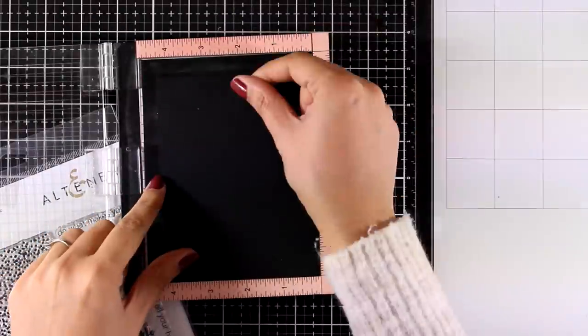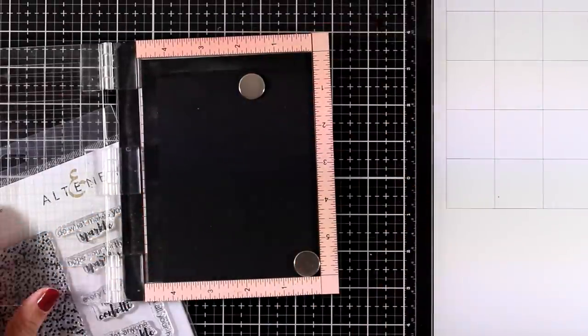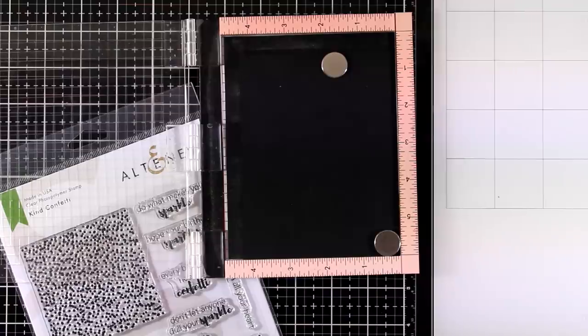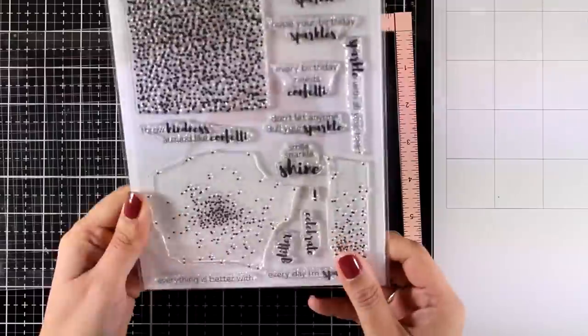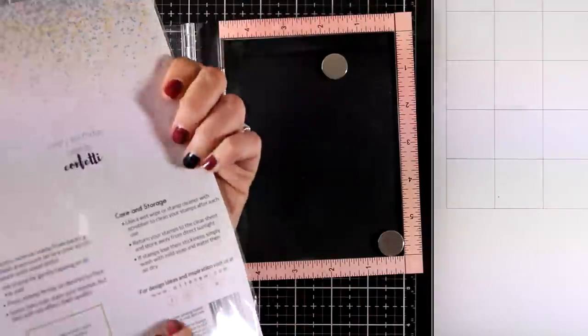Now I'm going to work on my background. You can of course use white cardstock, but I decided to go more dramatic today. So I'm going with a black panel that is 4.25 by 5.5.